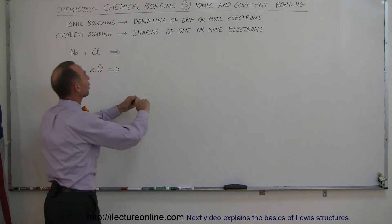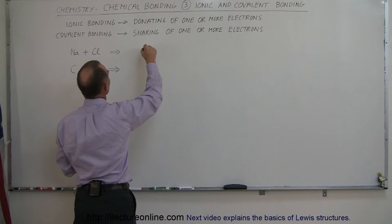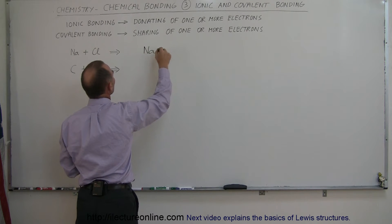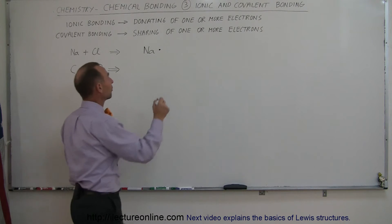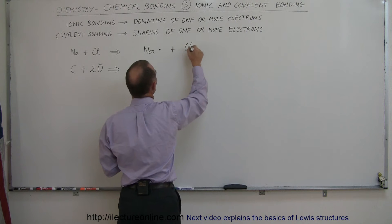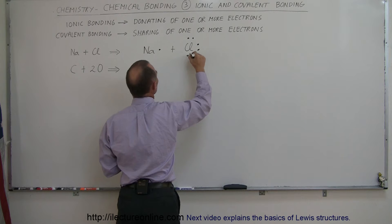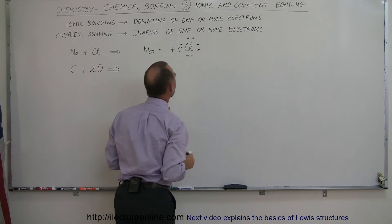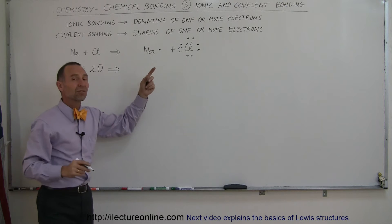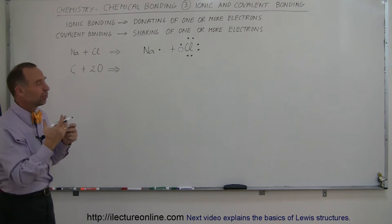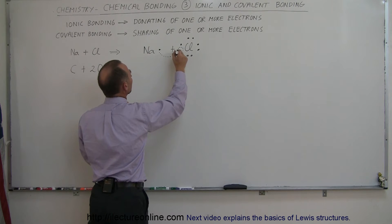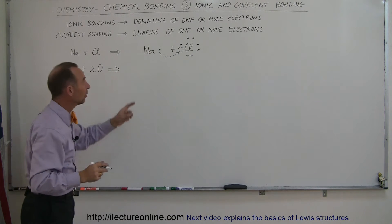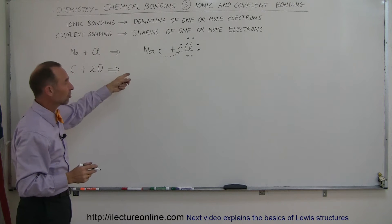If we draw the Lewis symbol for sodium, we get Na with a single dot, because there's only one valence electron in the second energy level for sodium. And the symbol for chlorine has seven valence electrons. Notice that it has a space in one of its orbitals. Sodium has one electron in its outermost energy level, doesn't hang on to it very strongly, and this electron will end up being donated to the chlorine. When that happens, sodium becomes a positively charged ion.